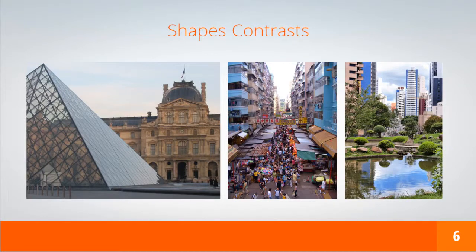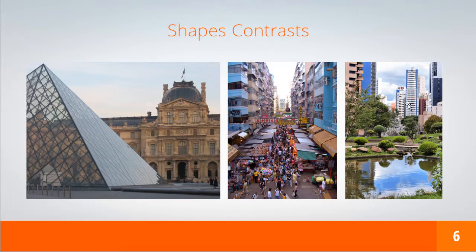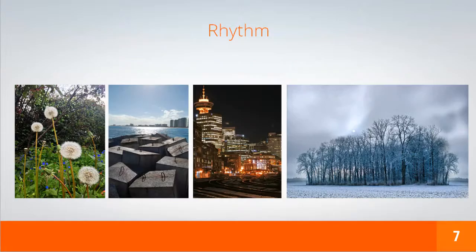The next contrast is the shape contrast. It will give you more variation in your shapes. As we can see here in this beautiful Louvre Museum photo, or in this outdoor marketplace, or here in the last one, where the shape contrast between the tall buildings in the background and the tree and water lines works very well and gives us more richness and enhances the visual language.